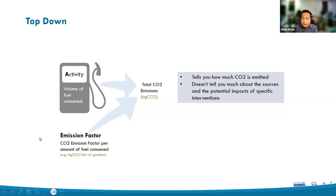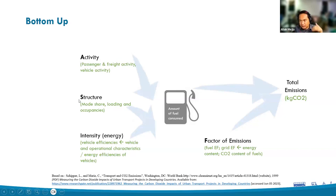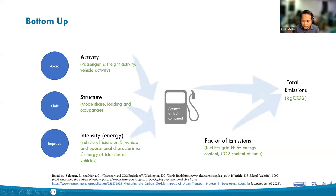This disaggregated approach is the ASIF framework. We disaggregate emissions based on parameters such as activity — passenger and freight activity, passenger kilometers, freight kilometers. We look at structure — the modal share by which activity is performed, how much of the PKMs are done by cars, motorcycles, buses, etc. We look at emissions intensity of these vehicles, as a function of the vehicles and operational characteristics. And we look at the emission factors of the different fuels used. With that, we can reflect the avoid-shift-improve framework in the calculations.